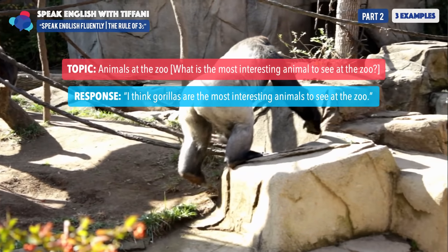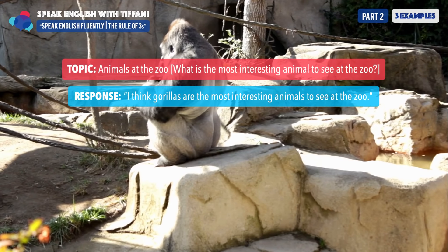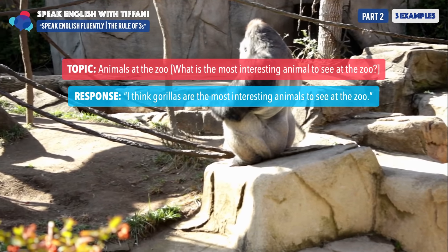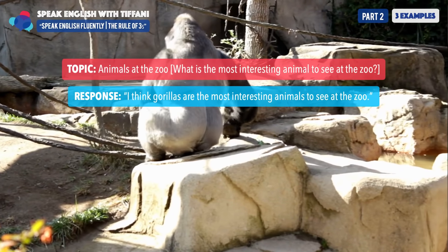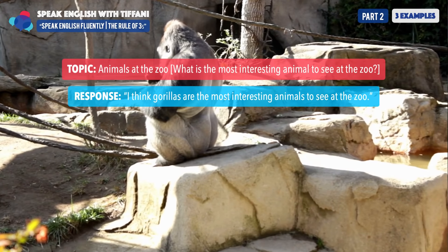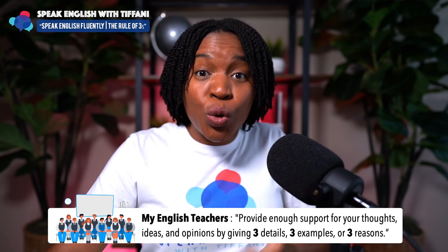Here we have a gorilla. The topic is animals at the zoo. What is the most interesting animal to see at the zoo? The response: 'I think gorillas are the most interesting animals to see at the zoo.' Now that response makes sense, but if you stop there, the native English speaker will not feel like you are a fluent English speaker. You have to go back to the simple rule of threes and think: let me give three examples to support my idea.